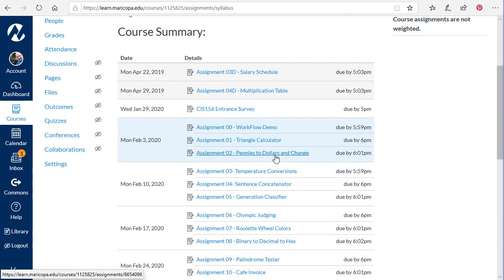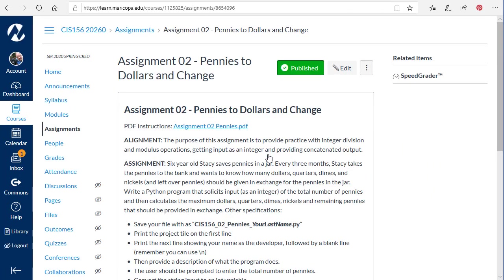The next project I'm going to look at is the pennies to dollars and change. The assignment here is six-year-old Stacy saves pennies in a jar. Every three months Stacy takes the pennies to the bank and wants to know how many dollars, quarters, dimes, and nickels, and leftover pennies should be given in exchange. Write a Python program that solicits input as an integer of the total number of pennies and then calculates the maximum dollars, quarters, dimes, nickels, and remaining pennies.